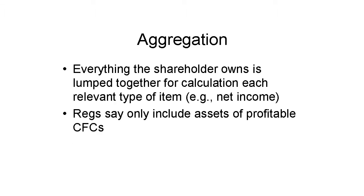Now it actually does get simple. As the final step, each U.S. shareholder puts his pieces together: just add up the positive net incomes and the losses separately, then reduce the positives by the losses. Then add up the 10% amounts and net interest amounts for each positive income CFC and separately for each loss CFC. The proposed regs say to use only the amounts from the CFCs with positive income that year and ignore the loss company ones — that's not what the law says, but it's in the proposed regulations. Net the interest against the 10% amounts, then reduce the positive incomes by this net 10% amount. The result is your total 951A inclusion.